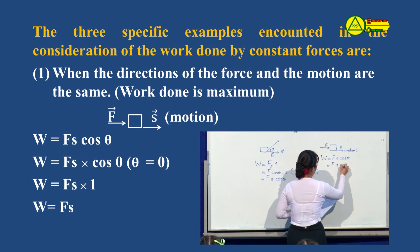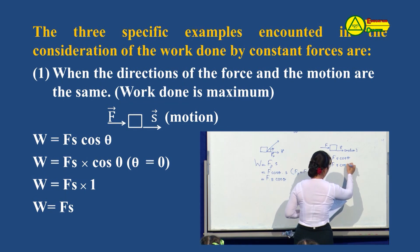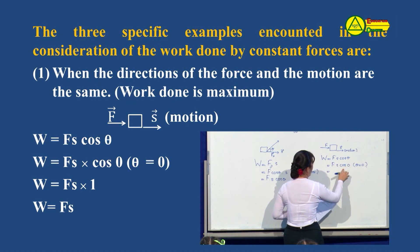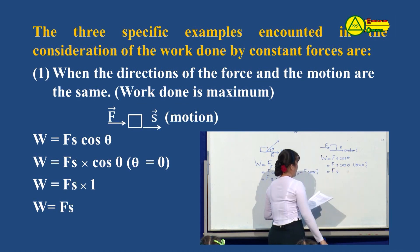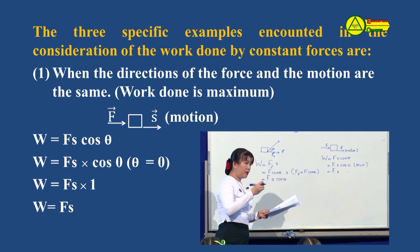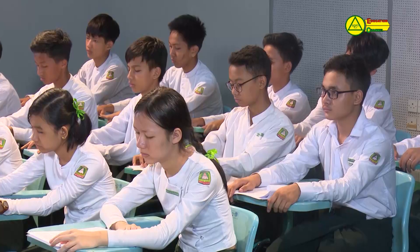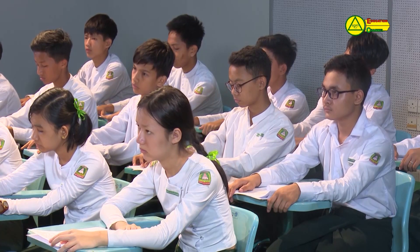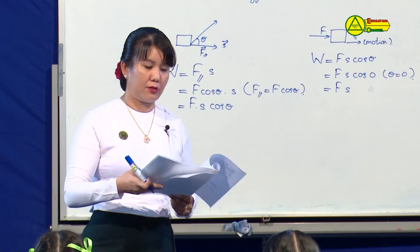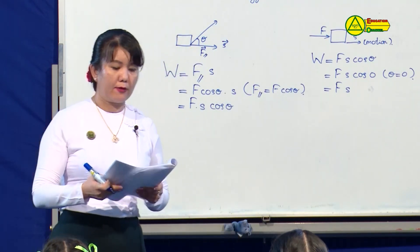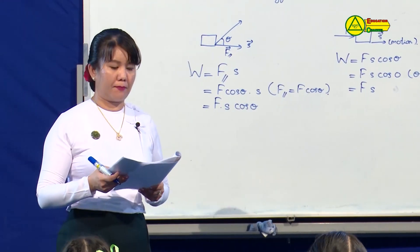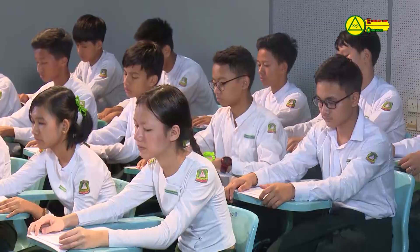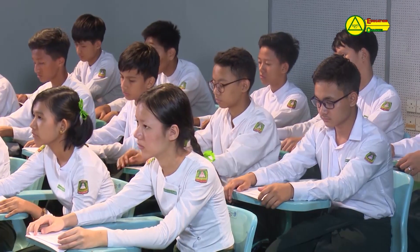Fs cos θ is equal to zero. Now we know that the direction of the motion is equal to zero. So they are the same. The direction of the motion is the same. This is how the force and the motion are parallel to each other.